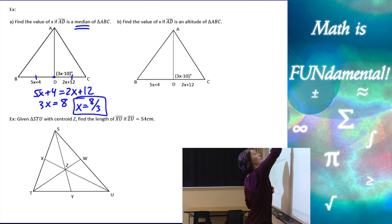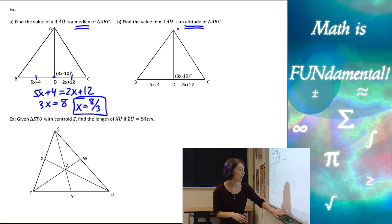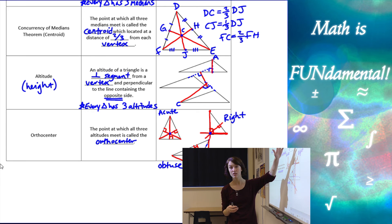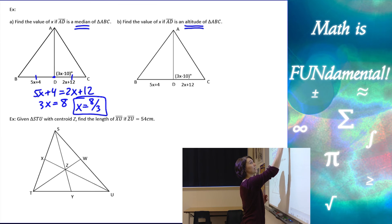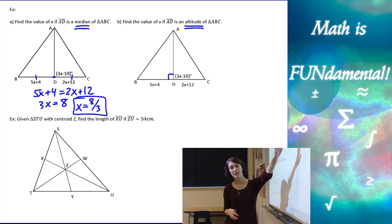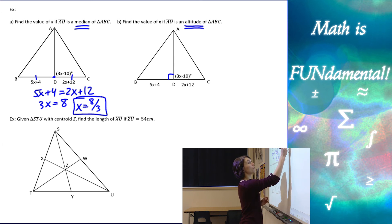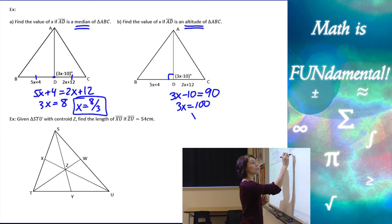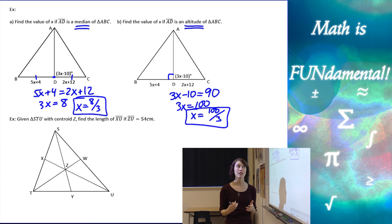Now if AD is an altitude instead: an altitude goes from the vertex and is perpendicular to the other side. It does not go through the midpoint, but we do know it's perpendicular. So in this case, I know the angle is 90 degrees, but I don't know anything about the lengths BD or DC — there's nothing telling me those are equal. So I set 3x − 10 = 90 degrees, giving 3x = 100, so x = 100/3. Be really careful with the information you're given — it determines how you set up your equations.